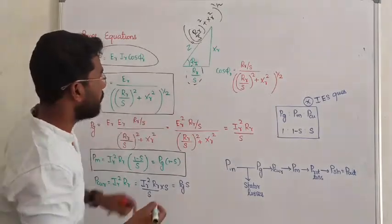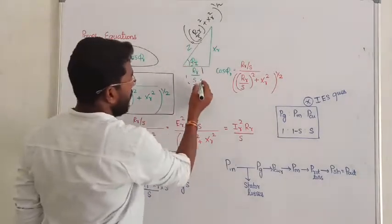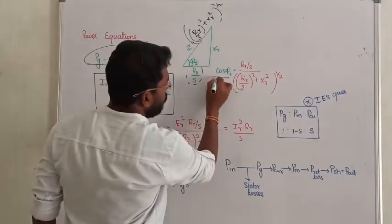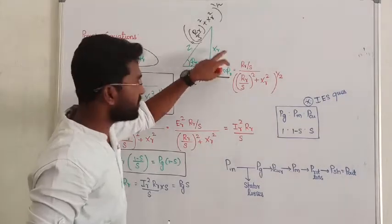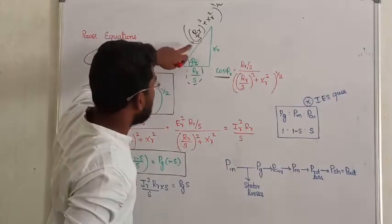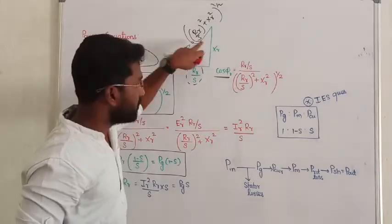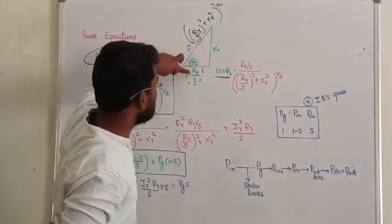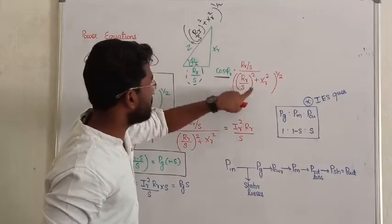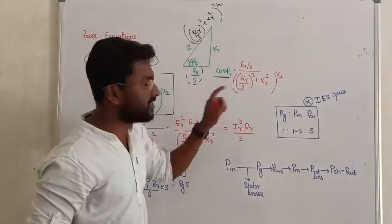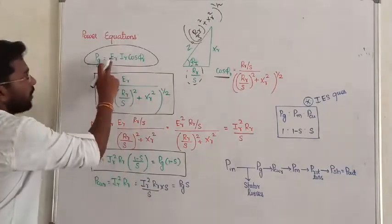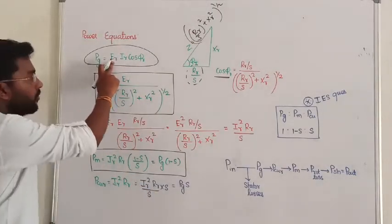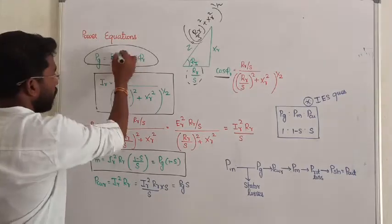Now we know the magnitude of impedance. From here, I would like to find cos φ_R. Cos φ_R is adjacent over hypotenuse — the adjacent side is R_R by S, and the hypotenuse is Z. We can substitute it here. From this, rotor EMF into rotor current.